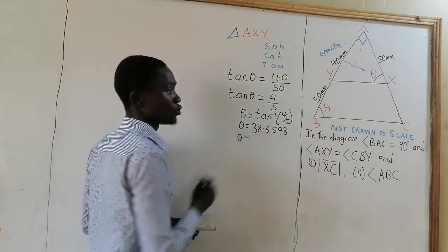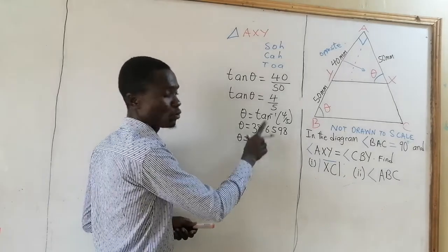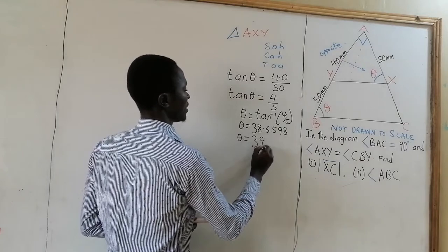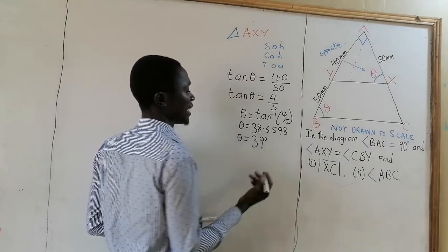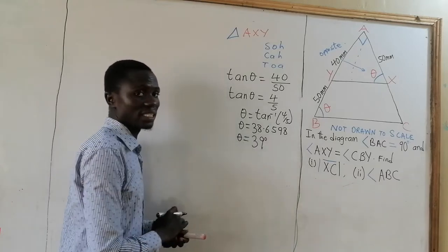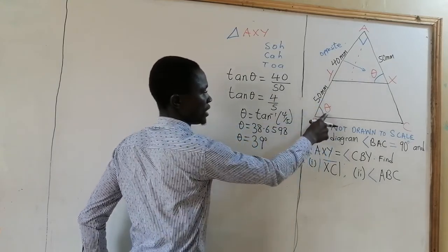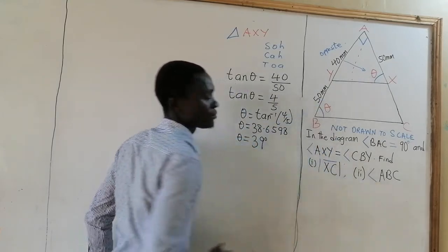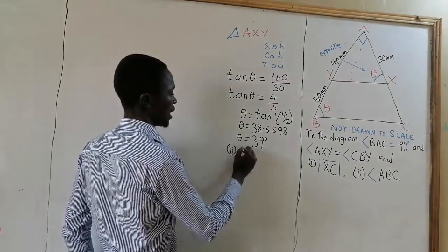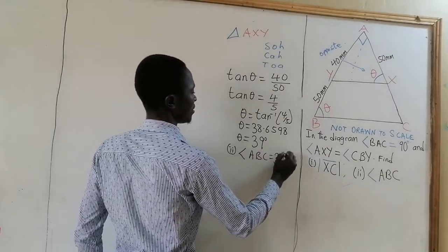Then let us write this to two significant figures. Note that the number here is 0.6, so we take it as 1 and add it to the 8 to become 39. So you have 39 degrees to the nearest degree or to two significant figures. Now theta here is the same theta here. So angle ABC equals 39 degrees.